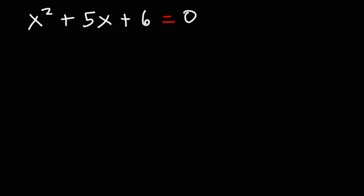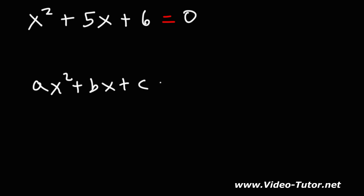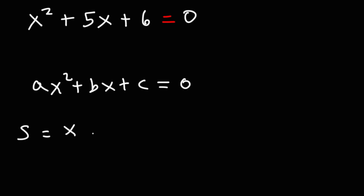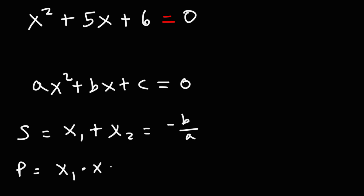In this video, we're going to talk about how to find the sum and the product of the roots of a quadratic equation. Here are some formulas you want to take down. Given a quadratic equation in standard form — ax squared plus bx plus c equals zero — the sum of the roots, x1 plus x2, equals negative b over a. The product of the two roots, x1 times x2, equals positive c over a.